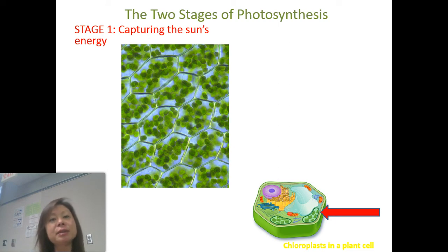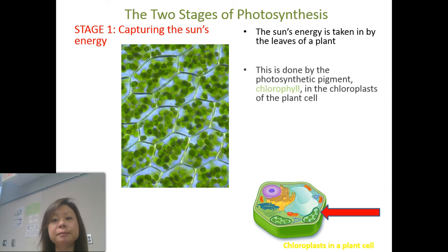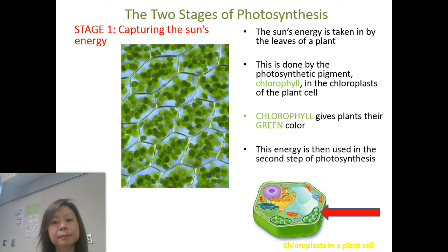Photosynthesis occurs in two stages. The first stage is when the plant captures the sun's energy. The leaves of a plant — their sole job is to capture the sun's energy to make food. Leaves are green because they have a pigment called chlorophyll, which gives them their green color and traps sunlight. They use this captured energy and go on into the second stage of photosynthesis.